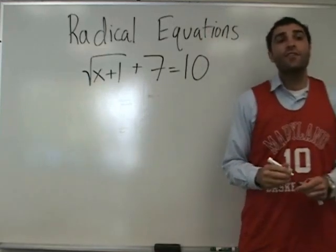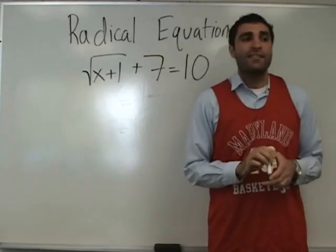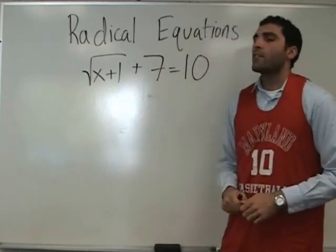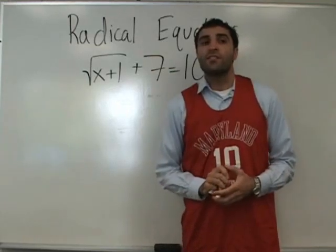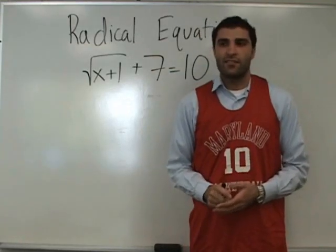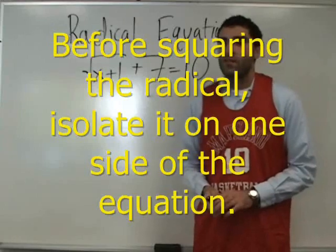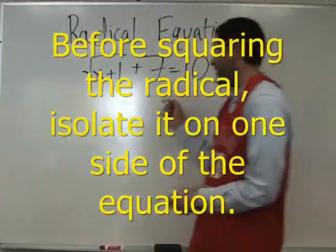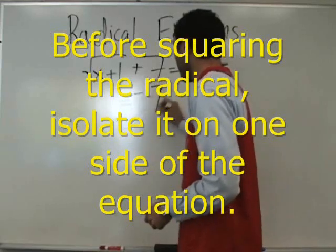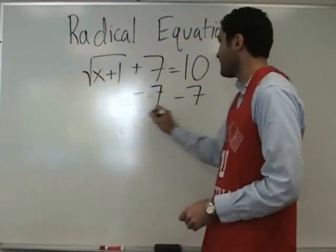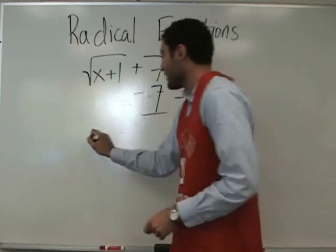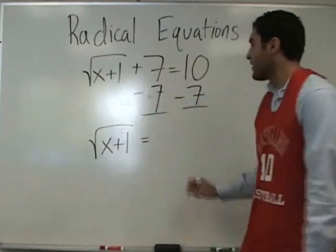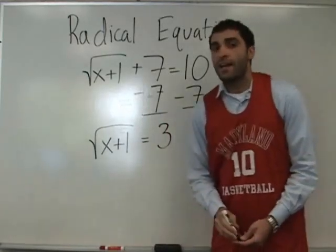Do we square both sides first, or do we simplify somehow? We need to reduce the radical before we square. Reduce before we square. We subtract 7 — minus 7, minus 7. That equals: square root of X plus 1 equals 3. Now we square both sides.